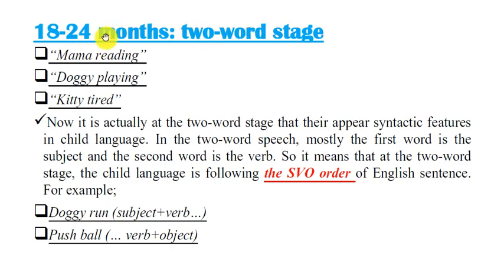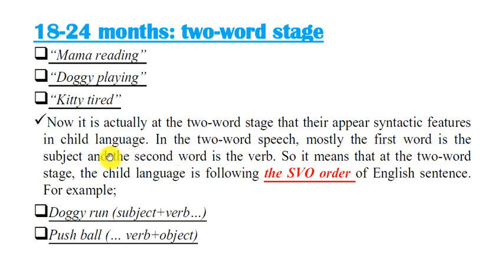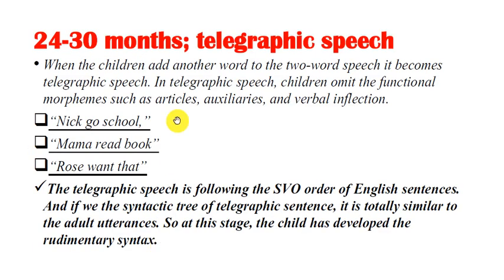The second stage in the acquisition of syntax is the two-word stage. This stage occurs when the child is about 18 to 24 months old. Examples include: 'mama reading,' 'doggy crying,' 'kitty tired.' It is at the two-word stage that there are pairs of syntactic features in child language. The first word is mostly the subject and the second word is the verb, following subject-verb-object order. For example: 'doggy run' (subject + verb), 'push the ball' (verb + object).